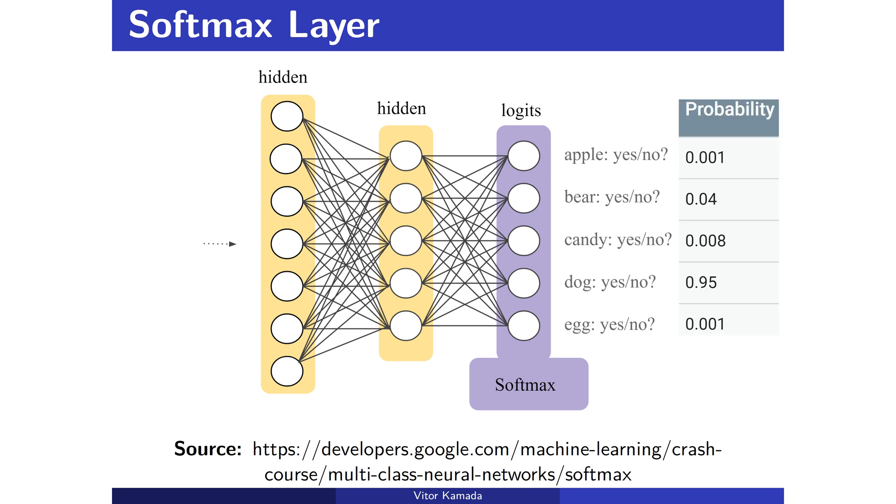For each category, softmax generates a probability between zero and one. For example, a picture has 95% to be a dog, but only 4% to be a bear. And if you sum up all the probabilities for each category, you are going to get one.